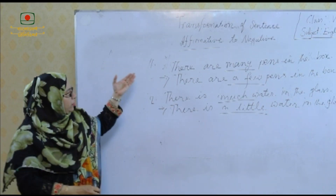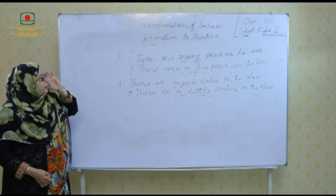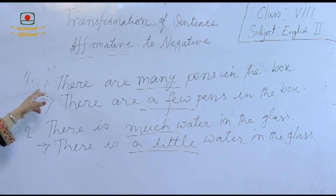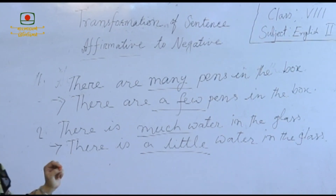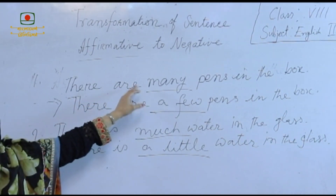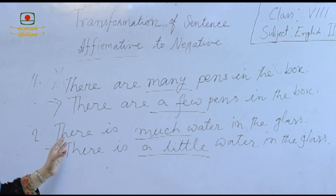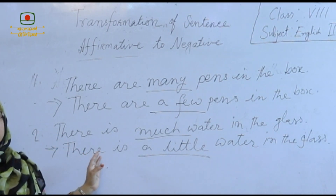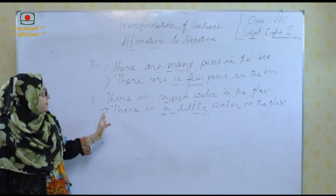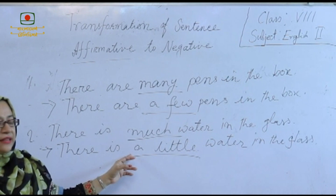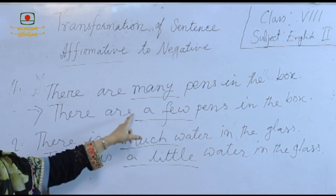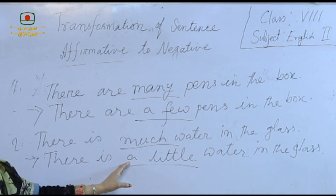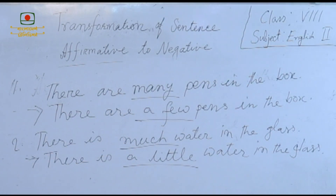There are some examples of affirmative and negative. The first: 'There are many pens in the box' — when we turn it into negative, we use 'There are a few pens in the box' instead of 'many.' Another example: 'There is much water in the glass' — the negative form is 'There is a little water in the glass.' So we use 'a few' instead of 'many' and 'a little' instead of 'much'.